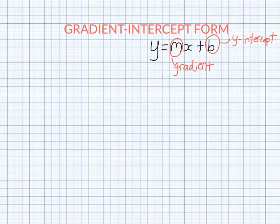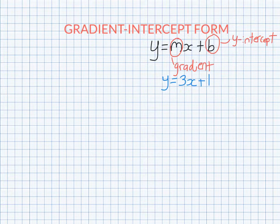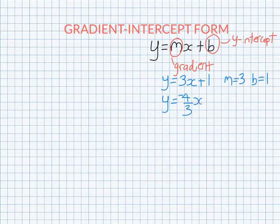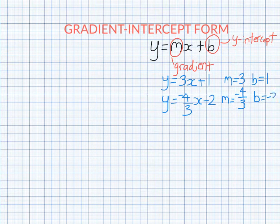So for example, let's say we had the equation y equals 3x plus 1. Here the gradient is 3, the y intercept is 1. Let's say we had y equals negative 4 over 3x minus 2. Here the gradient is the number in front of x and the y intercept is the number by itself.